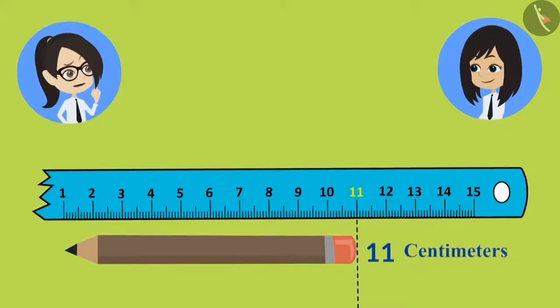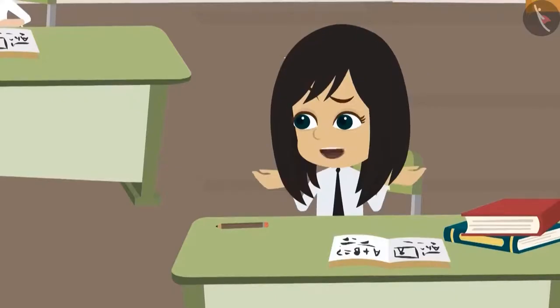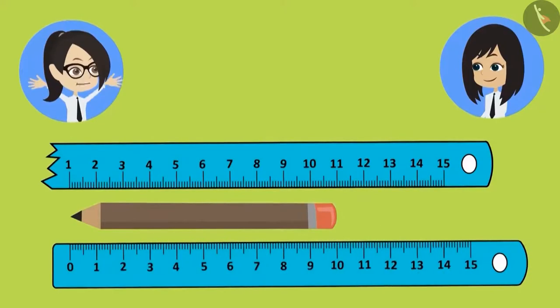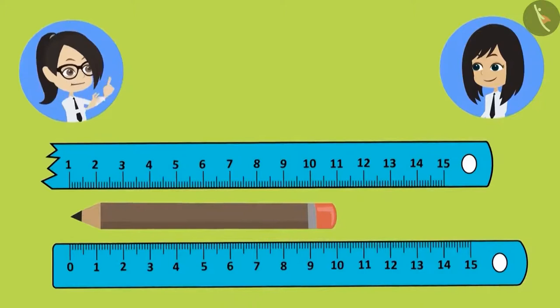Why is the pencil measuring 11 centimeters? We just measured it. It was 10 centimeters then. It means we have made some mistake. Let's do one thing. Let's try to measure this pencil with the correct scale. Then we might come to know our mistake.